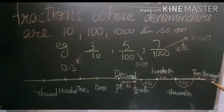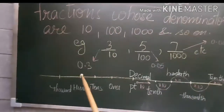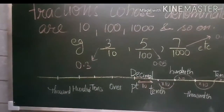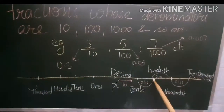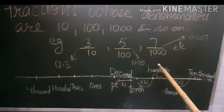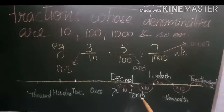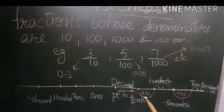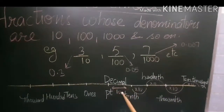Now let us understand decimals using a number line. This center point is represented by the decimal. On the left side you have ones, tens, hundreds, thousands, and so on. On the right side, the decimal part is new to us. Moving right, we have tenths, then hundredths, then thousandths — notice the 'th' at the end of each name.